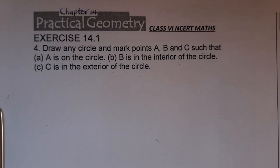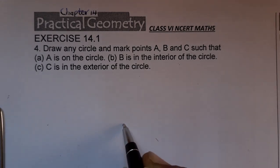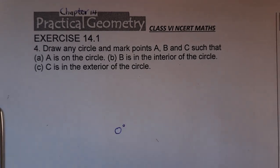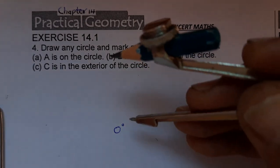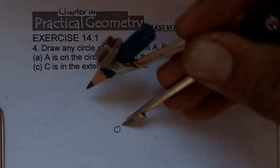So let's make any circle. Let's mark one center first of all. Let us give the center O. Now let's draw one circle, any radius we can take.